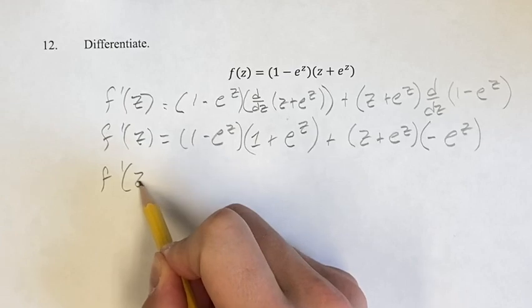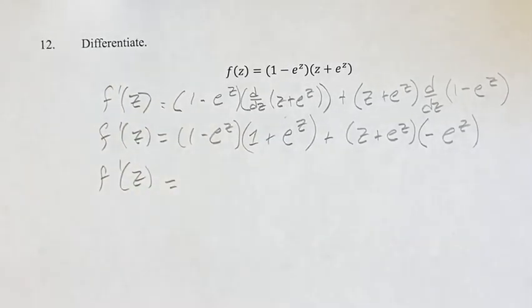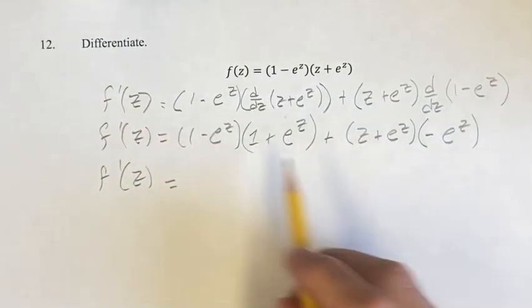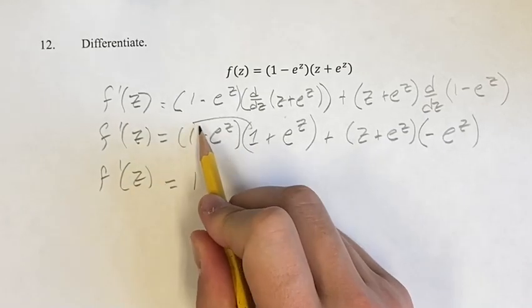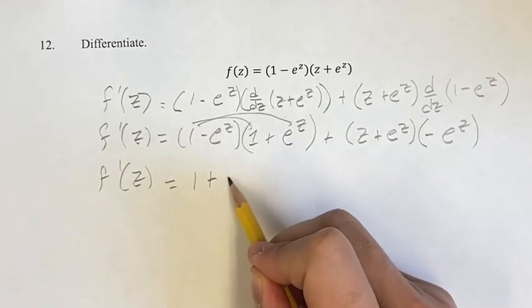So here, we have, distributing out these parentheses, we have 1 plus 1 times e to the z is e to the z,